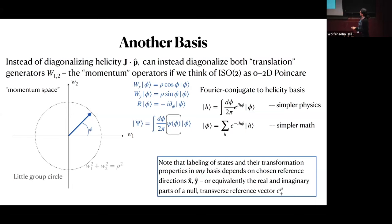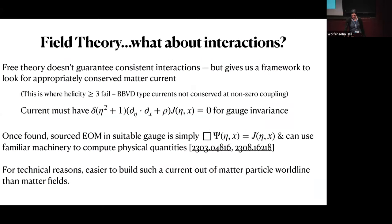It's useful to keep both bases in mind: the helicity basis is simpler for high-energy physics, while the angle basis makes mathematical transformation properties simpler. You can go between the two by a Fourier transform of the basis states.